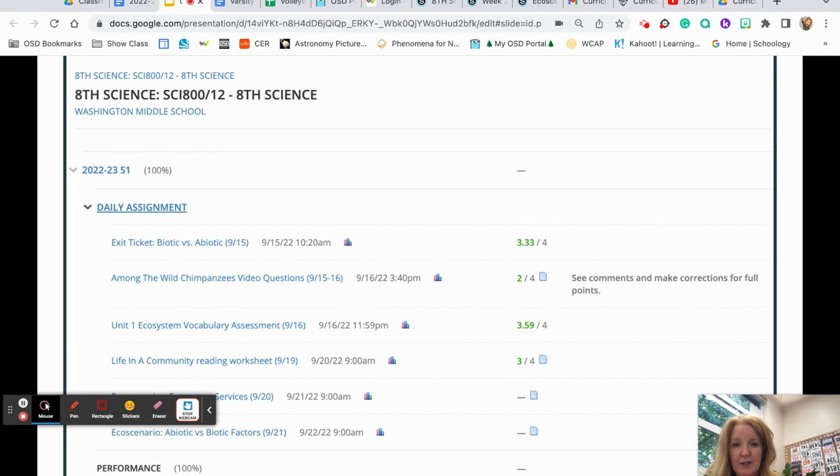When students are in Schoology, if they click on that grades button, they do see a breakdown of everything we've done so far and I've graded. And these are live links. So students can click on these links right to the assignment. And this is where they look for scores and any comments they received and feedback on those assignments.